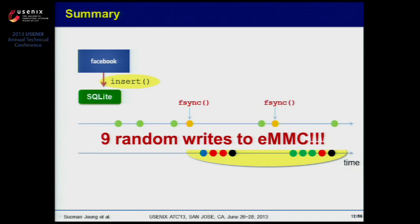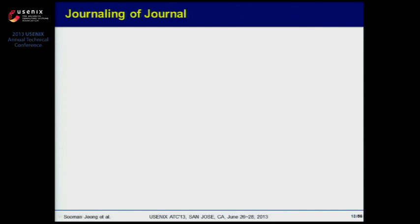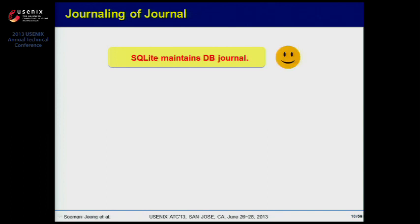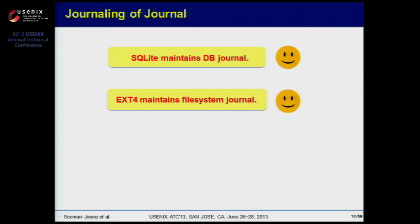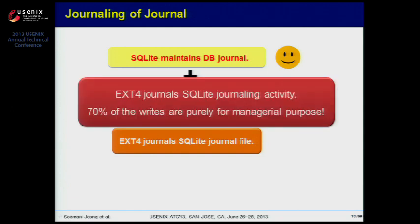We regard this phenomenon as not only excessive but also abnormal. SQLite maintains a DB journal — this is okay. And EXT4 maintains a file system journal — this is also okay. But when they are combined, EXT4 journals the SQLite journal file, which we do not expect. We call this duplicated operation of SQLite and EXT4 "journaling of journal."